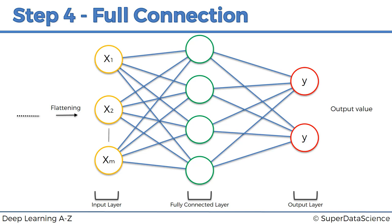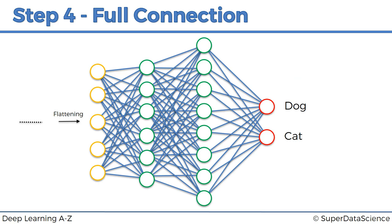Let's look at a more realistic example. Here we've got a better-looking artificial neural network where we have five attributes on the inputs, then six neurons in the first hidden layer, eight neurons in the second fully connected layer, and then two outputs — one for dog and one for cat.